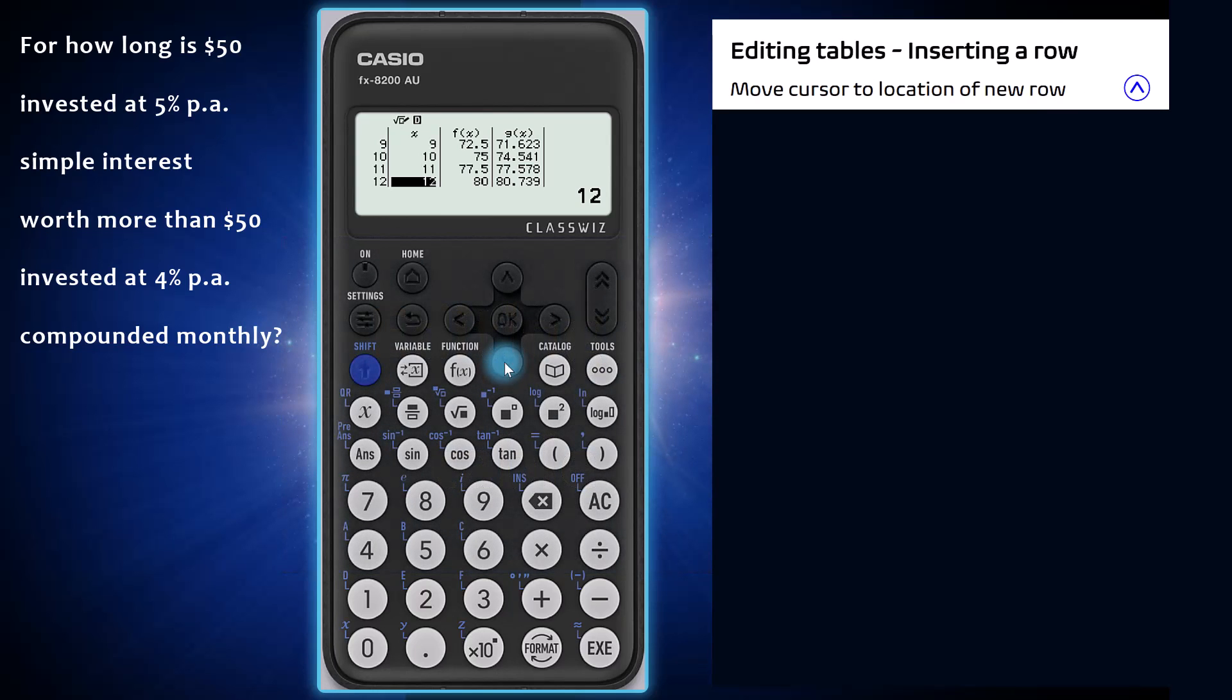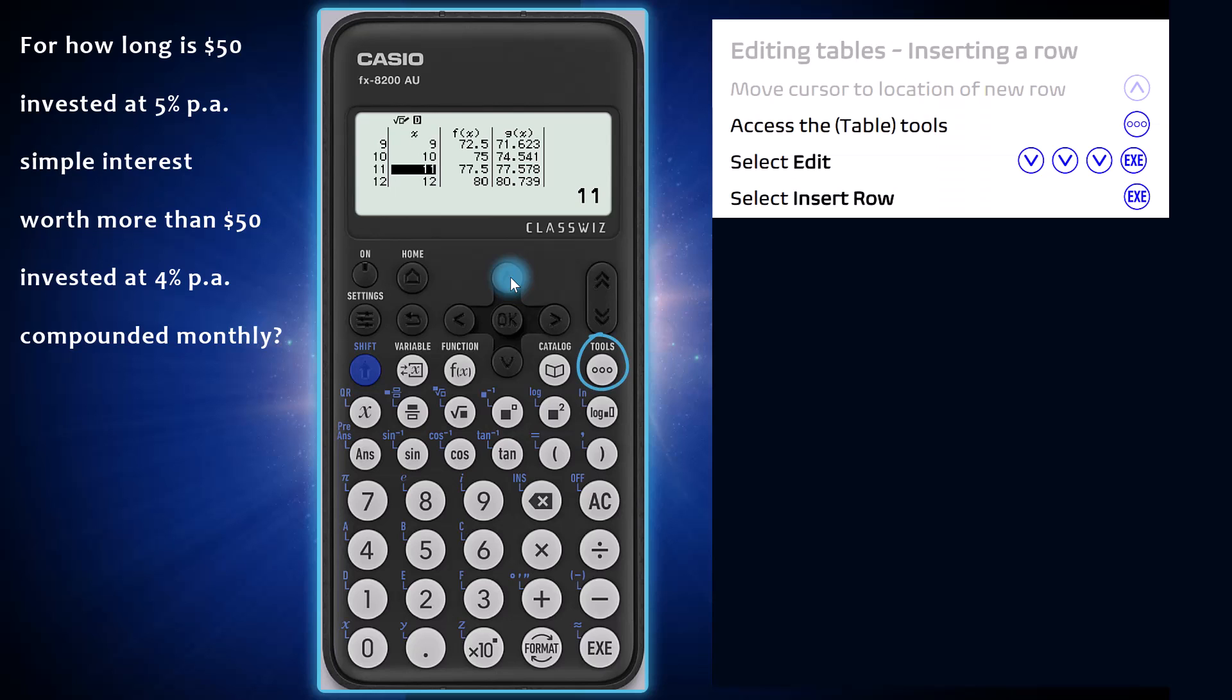Tables of values in a Casio FX 8200 AU can be edited by inserting rows and by over typing to enter new x values. To insert a row into an existing table, first move your cursor to the location of the new row. I'm going to add a row in between x equals 10 and x equals 11 to find more closely the time value when these two investments are equal. With the cursor in position, access the table tools by pressing the tools button, arrow down to edit, press execute or the right arrow, and then press execute to insert a row.